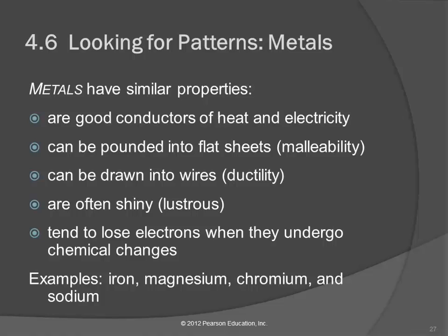We should be familiar with some of the characteristics of these different groups, the metals and the nonmetals. The metals are going to have similar properties. They're not all identical, but they have similar properties. They're good conductors. They conduct heat and they conduct electricity. They can be pounded into flat sheets, and the word for that is malleable. Metals are malleable. They can be made into wires. They have ductility. And they are often shiny. Another thing about metals is that they tend to lose electrons when they make chemical changes. There's a couple examples down there: iron, magnesium, chromium, sodium.